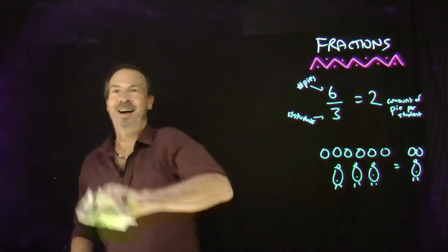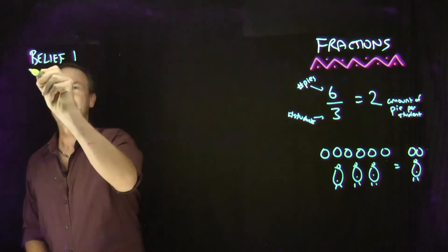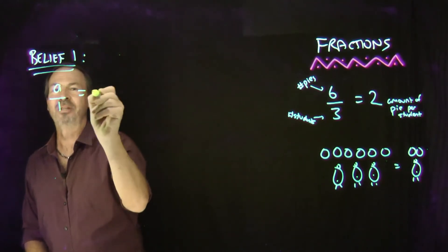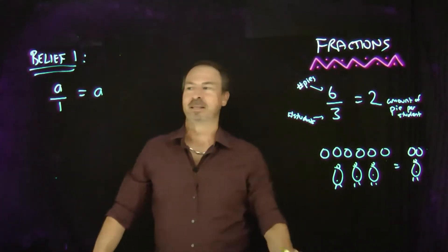Here's our belief number 1. We're onto it. Belief number 1, first of 5. Belief 1 says that if you have 'a' pies for one student, that's 'a' pies per student, no matter what number 'a' represents.